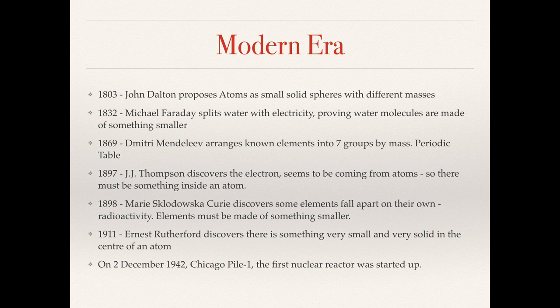In 1897, J.J. Thompson discovers the electron and realises that this seems to be smaller than the atom, and seems to actually be coming from the atom. So there must be something inside the atom. A year later, Marie Curie discovers that some elements actually fall apart naturally on their own, and really comes up with the idea of radioactivity. So elements must be made of something smaller.